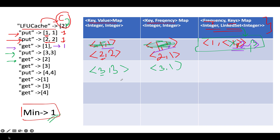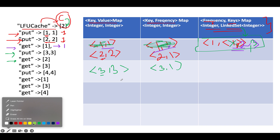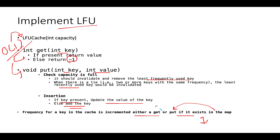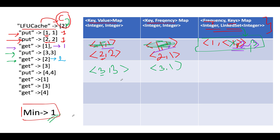The next operation is get(2). Key 2 exists in our map, so we return value 2. As per the rules, whenever a get operation is invoked, the frequency for that key should be incremented by 1. Key 2's current frequency is 1, so it gets incremented to 2. We delete key 2 from frequency 1's set in the frequency-keys map and create a new entry at frequency 2 containing key 2.